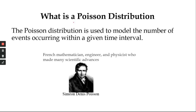The Poisson Distribution is used to model the number of events occurring within a given time interval. For example, the number of people arriving at a bank per hour.